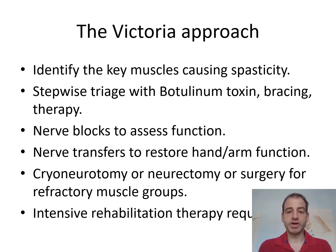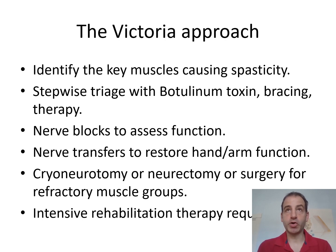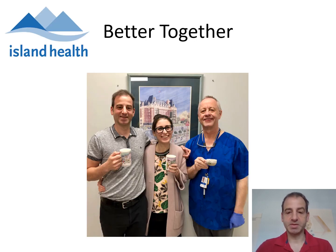In summary, our Victoria approach to spasticity is to identify the key muscles which cause spasticity. We begin with conservative measures including bracing, physical therapies, and botulinum toxin. We use diagnostic nerve blocks to knock out the most important spastic muscles. We are using nerve transfers when possible to restore hand and nerve function. Neurectomy or targeted cryoneurotomy is a good option for muscles that reduce well with nerve blocks and are not contracted. All patients require intensive therapy — we believe spasticity is a team sport.